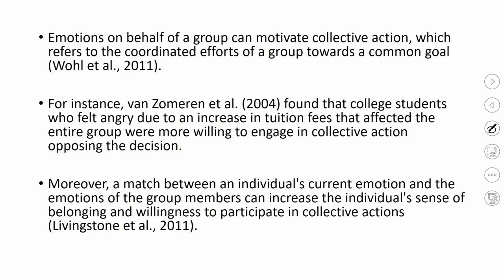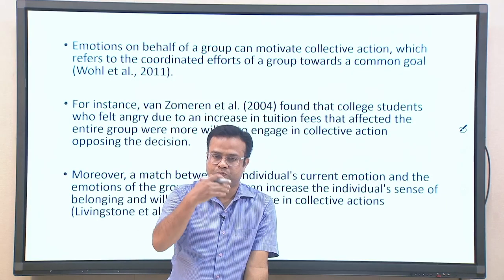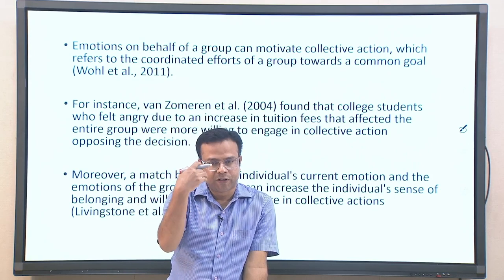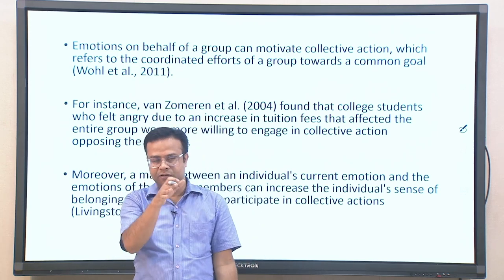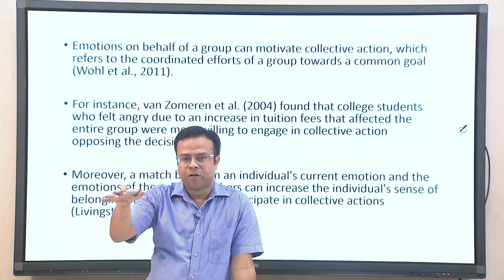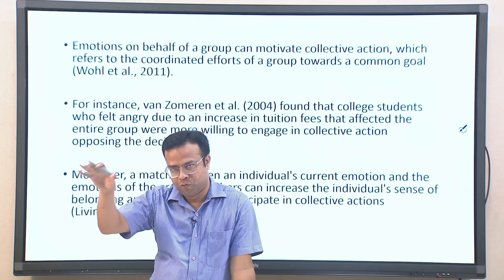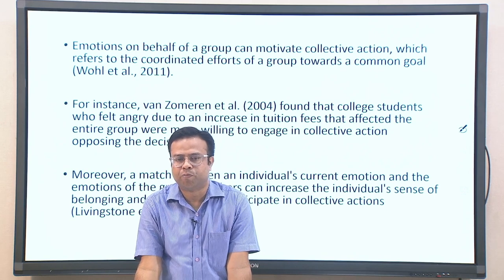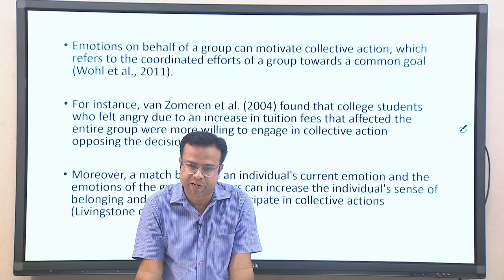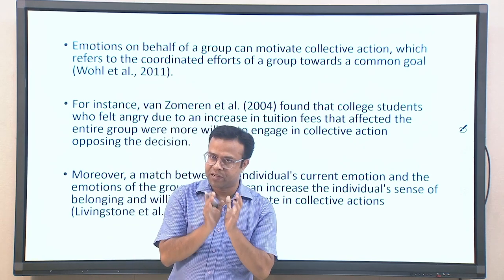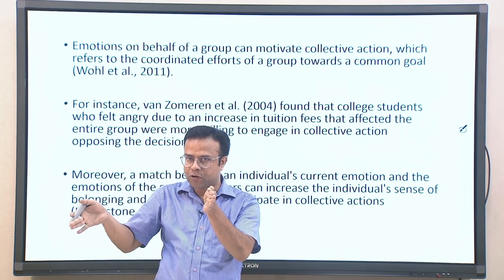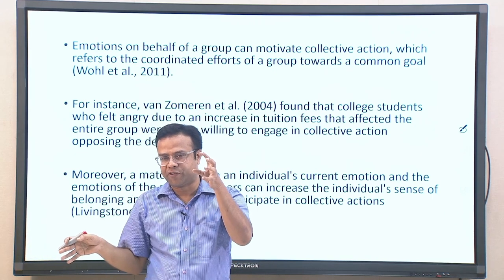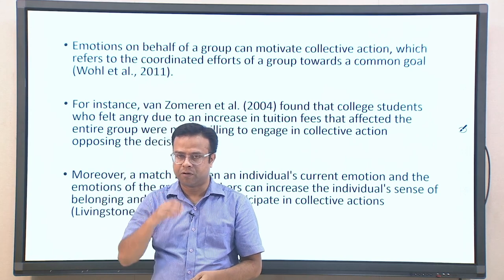For instance, Zomarin and Kulik found that college students who felt angry due to an increase in tuition fees affecting the entire group were more willing to engage in collective action opposing that decision. When the tuition fee was increased and students felt angry on behalf of their group, they were more likely to engage in collective opposition. Moreover, a match between an individual's current emotion and the emotions of other group members can increase the individual's sense of belongingness and willingness to participate in collective action.